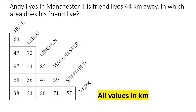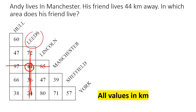Andy lives in Manchester. His friend lives 44 kilometers away. In which area does his friend live? If you look at Manchester, you could go down but there's no 44. But if you go left, there's a 44 over there, and that intersects the column for Leeds. So the answer is Leeds.